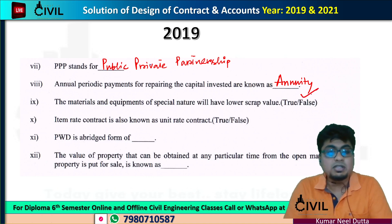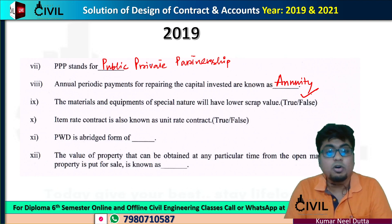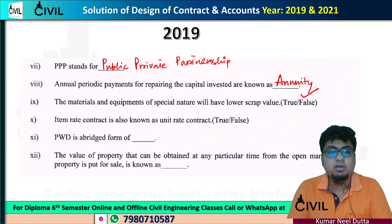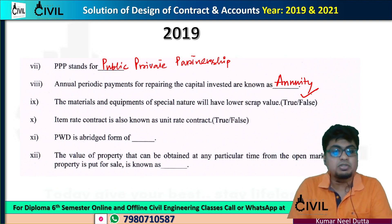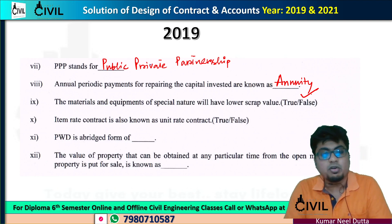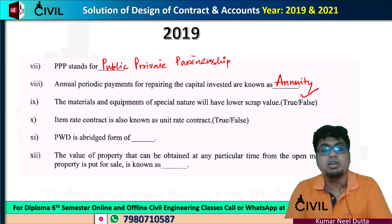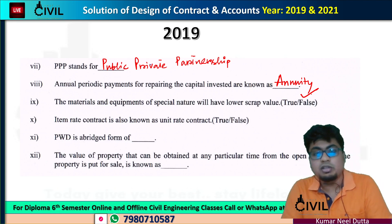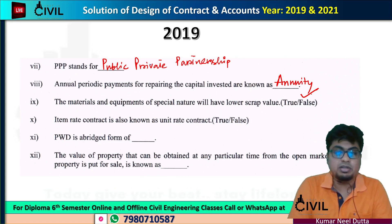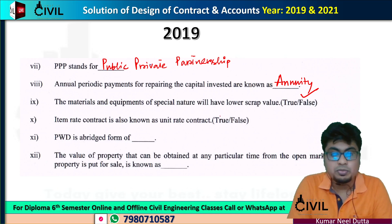If the item rate is also known as unit rate contract, unit price contract, unit rate contract, unit price contract, and schedule contract — it will be true.